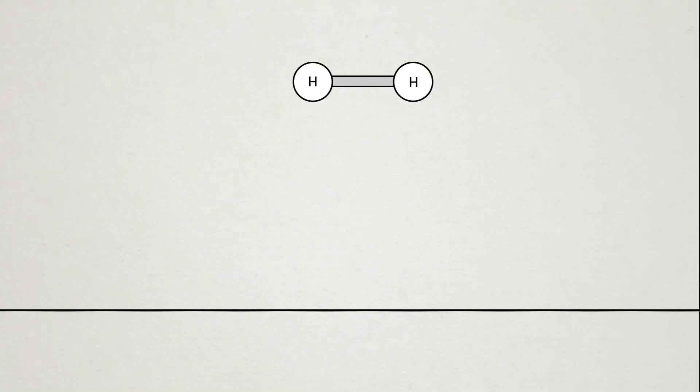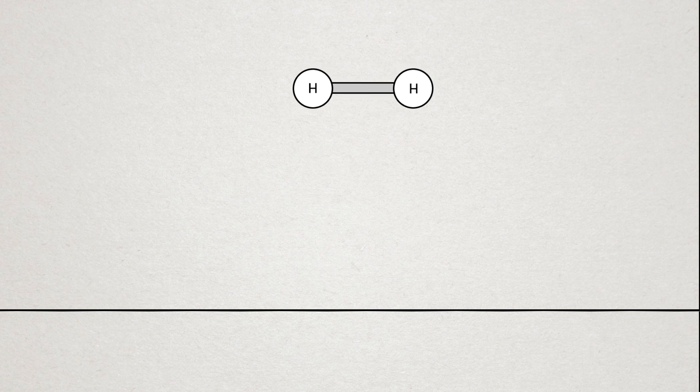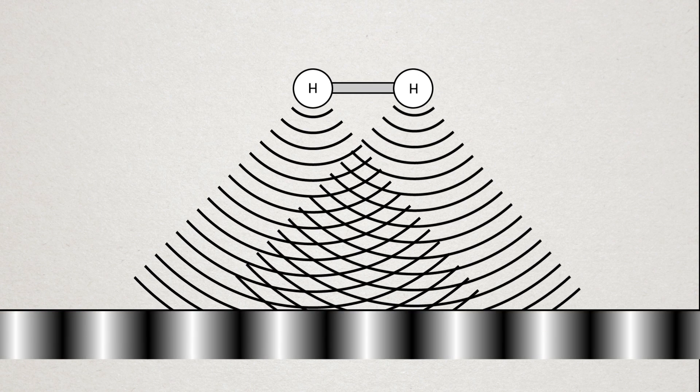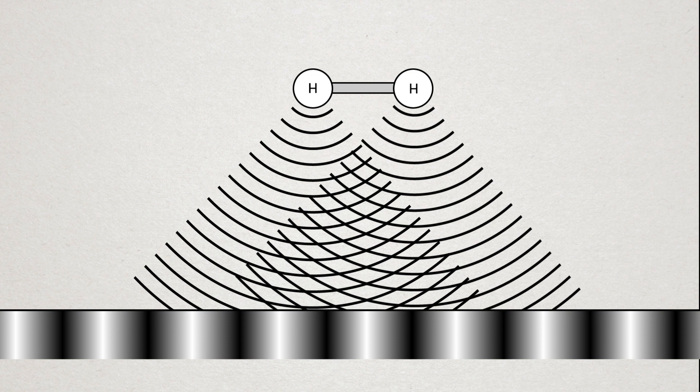The scientists knew the distance between the two slits. It was just the size of the hydrogen molecule. However, when they measured the interference pattern, they didn't see the same as the normal double slit experiment.